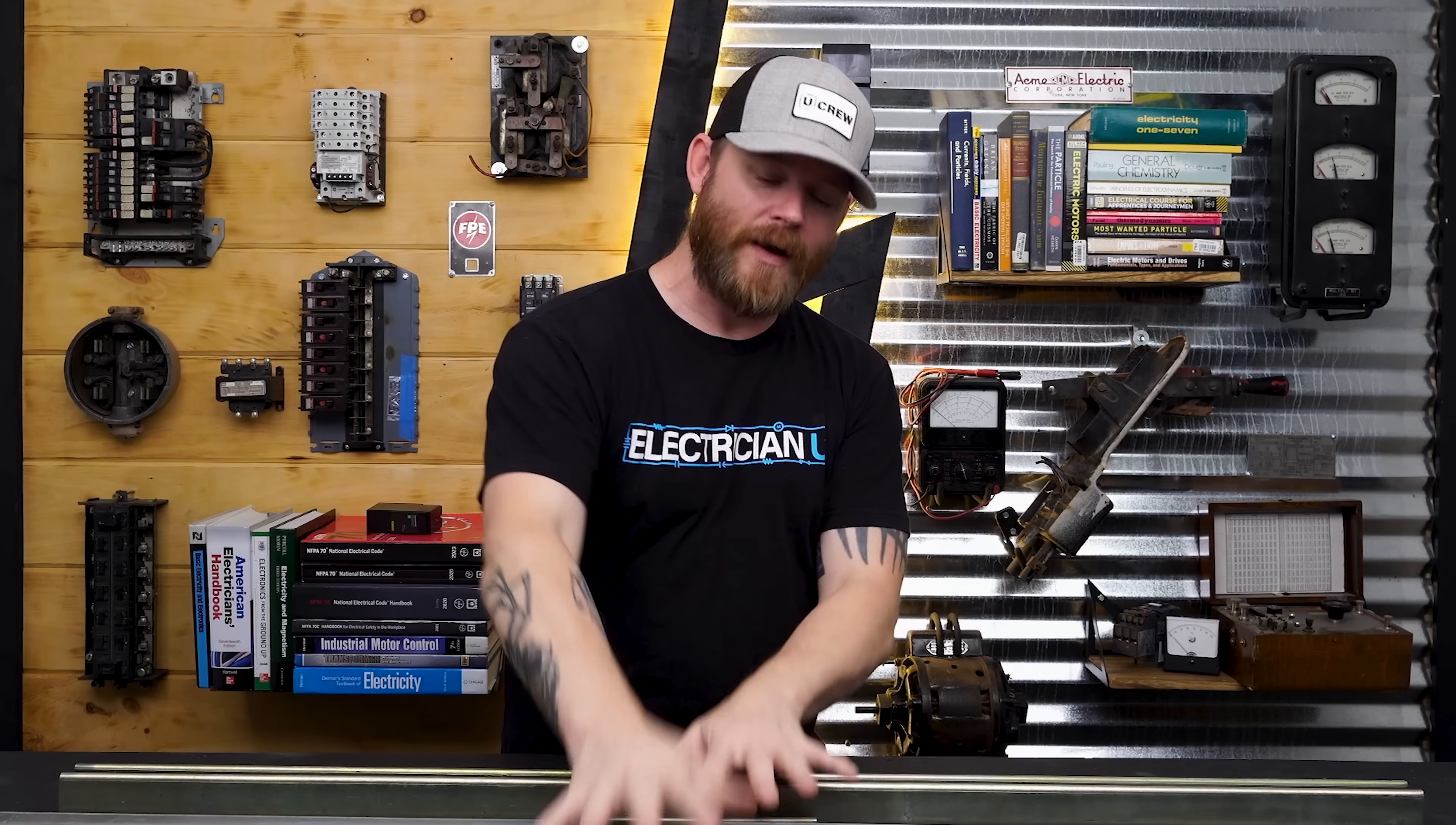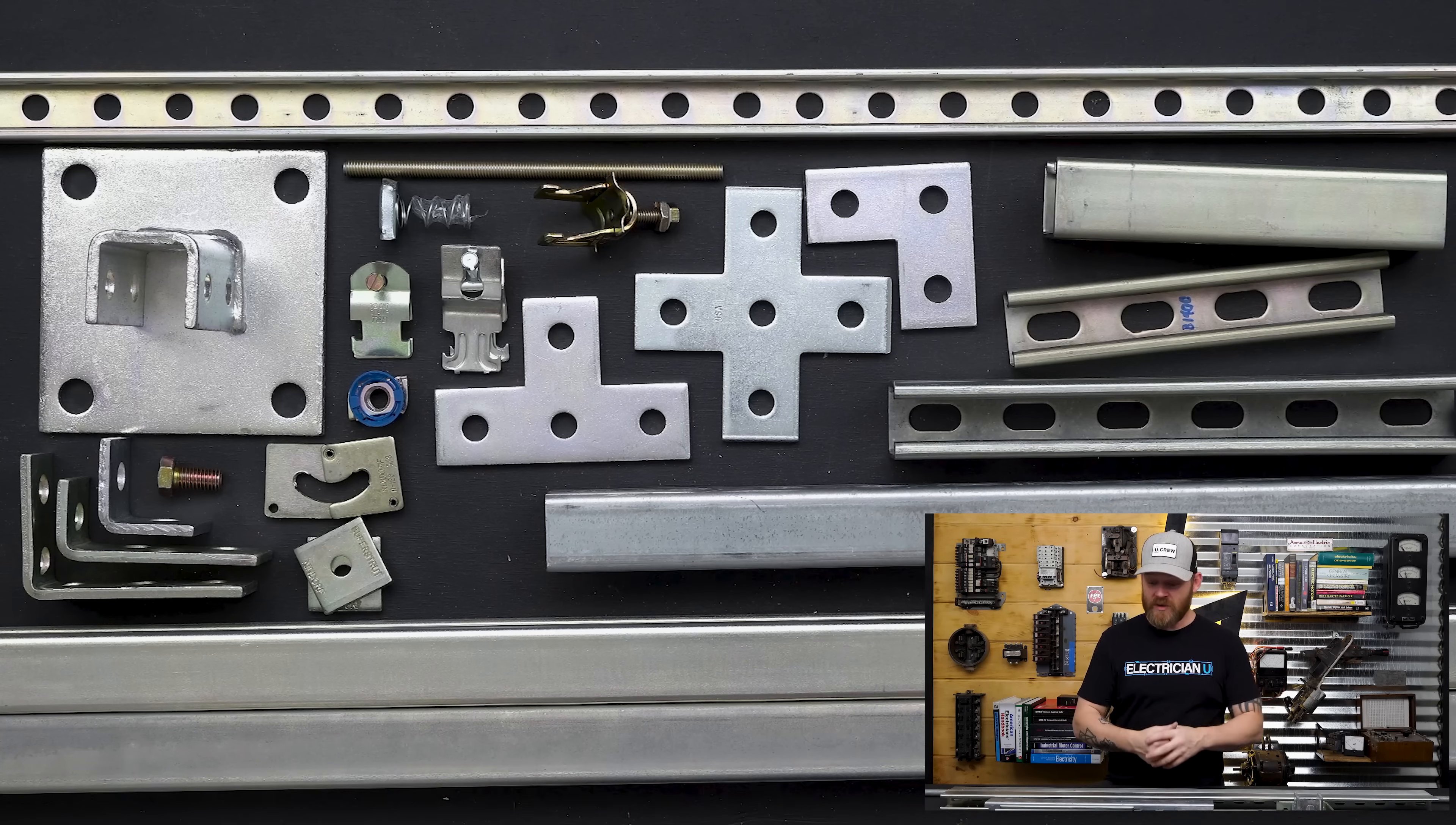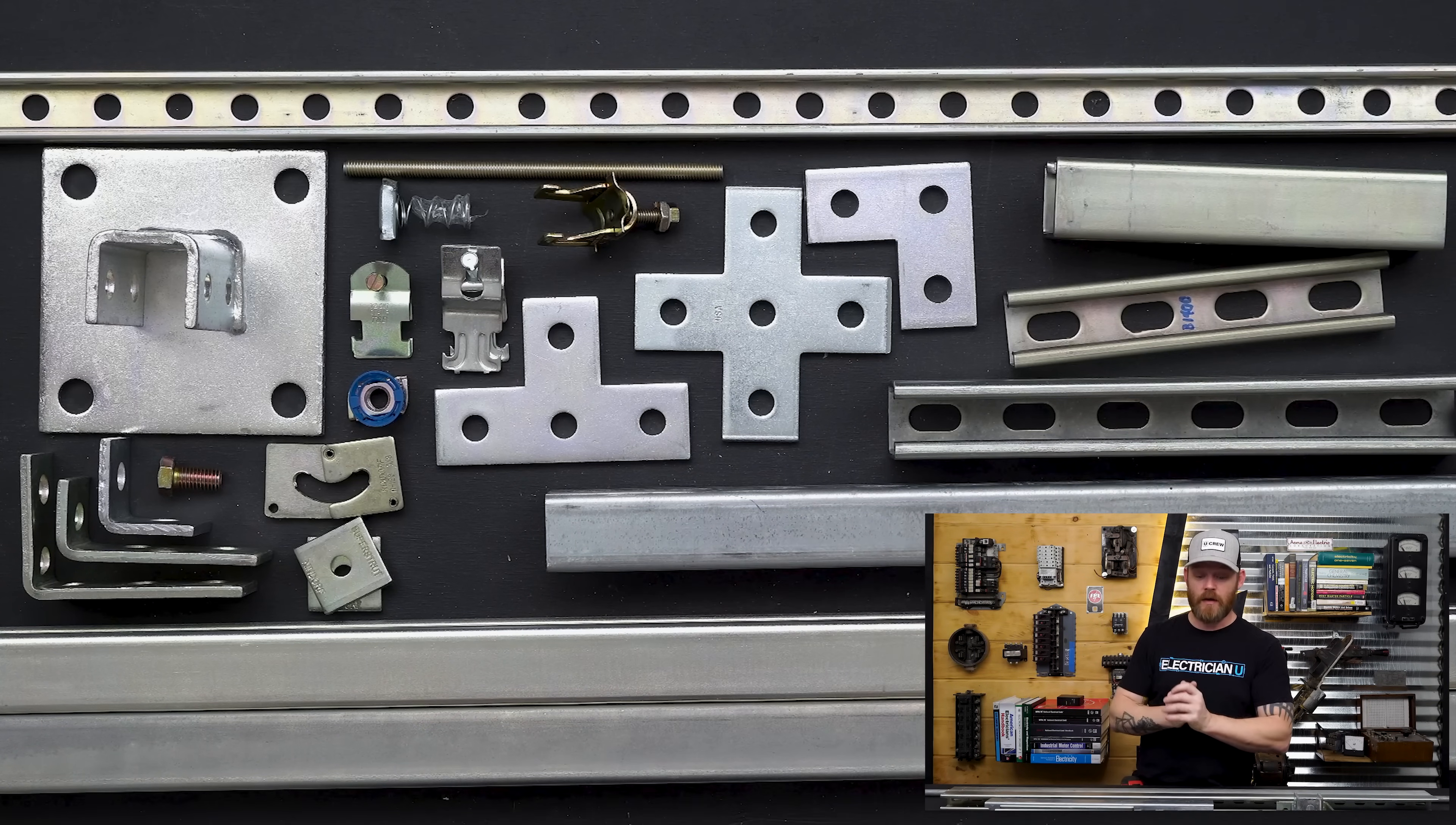They've also got PVC coated. So like there's just tons and tons of different types of strut that you can get, but the most prevalent that you're probably going to find at Home Depot are going to be the super strut and Kindorf options. So that's pretty much it for the types of strut themselves or the Kindorf.